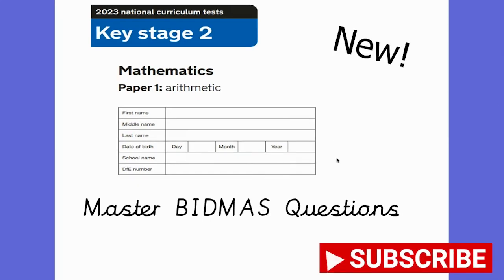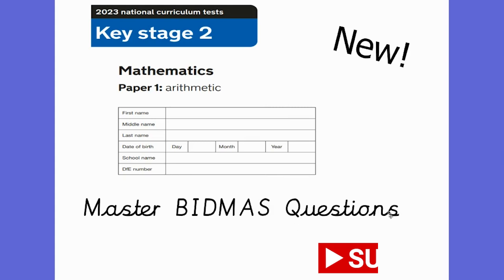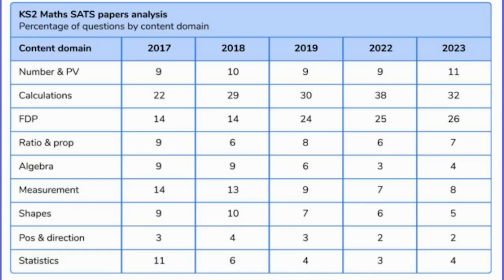Hello everybody and welcome back to the channel. In today's video I'm going to be talking about BIDMAS. These are questions that come up on the Arithmetic SATS paper, Year 6 SATS paper, and they are about the order of operation.